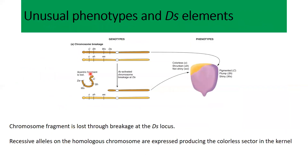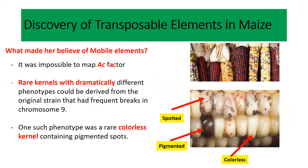What made her believe in transposable elements? First, it was impossible to map Ac, so she concluded these elements can change their position. Second, there were kernels with dramatically different phenotypes that could be observed in offspring from the original strain that had frequent breaks in chromosome number 9. In those offspring, kernels with different phenotypes were observed.